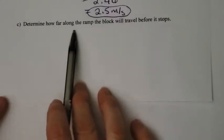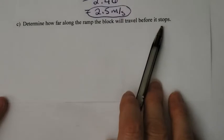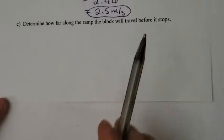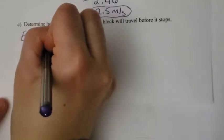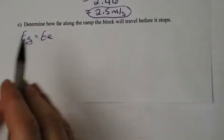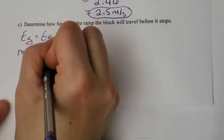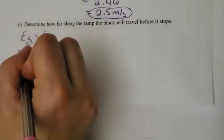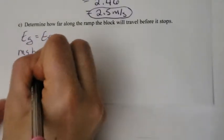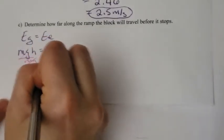I want to determine how far along the ramp the block will actually travel before it stops. When it stops, all that originally elastic energy, which got changed into kinetic energy, has now changed into gravitational potential energy. So I know that EG is equal to that original elastic potential energy. The formula for EG is just MGH. That's equal to my elastic. I'm trying to get H all by itself, so divide both sides by MG.